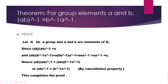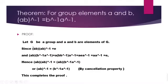Then, if you look at AB composed with AB whole inverse, this is always equal to identity. Because A composed with B is some element of group Z, and by the closure property you are taking its inverse. By the inverse axiom, since Z is a group, A composed with B times AB whole inverse is always identity. You can consider A composed with B as a single element C, so you are taking C times C inverse, which is identity.